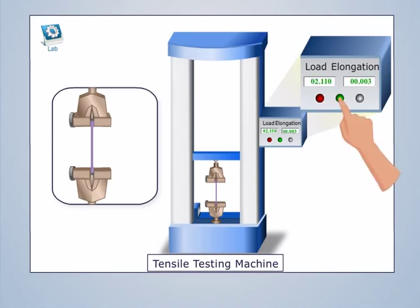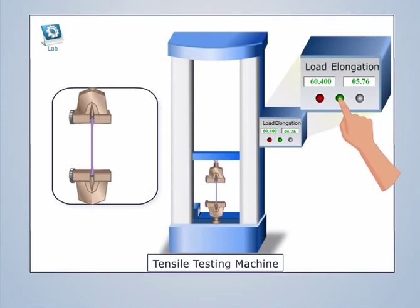To apply the load, we need to press the green button. When we press the green button, we get the readings for load and elongation. To note the next reading, we keep pressing the green button again and again until the shaft breaks.